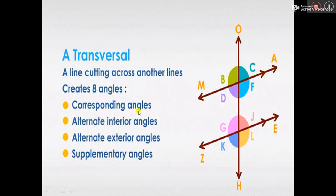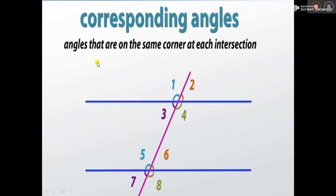First, we have the corresponding angles, alternate interior angles, alternate exterior angles, and supplementary angles. But for today, we are just going to be looking at the corresponding angles. Please, I want you to pay close attention as we move on. The corresponding angles are angles at the same corner at each intersection.